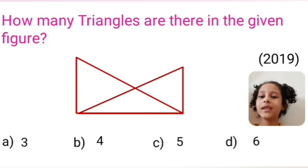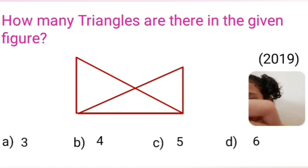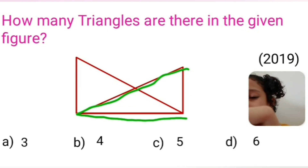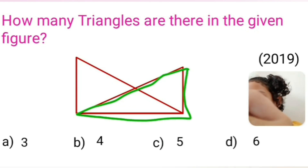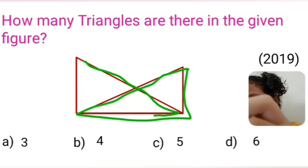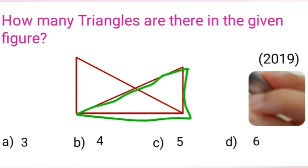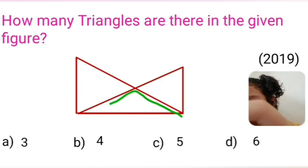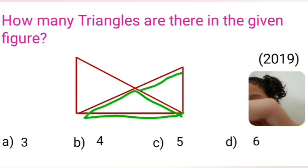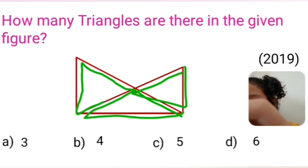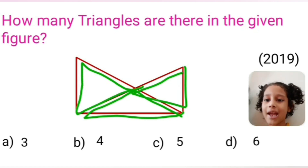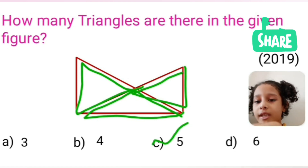How many triangles are there in the given figure? Let's count triangles: 1, 2, 3, 4, and 5. Five triangles are there in the given figure. Let's take option C.